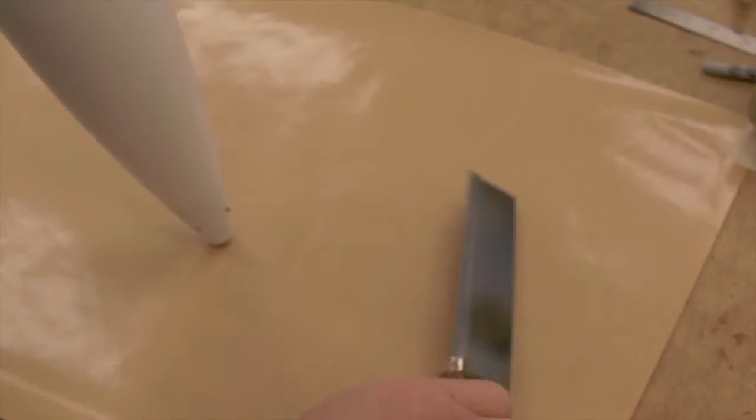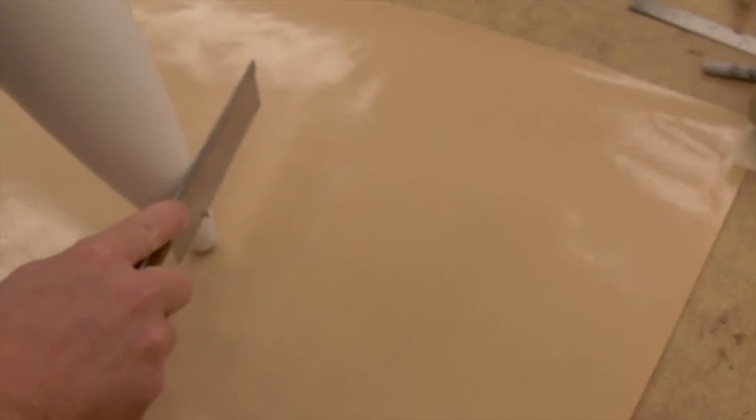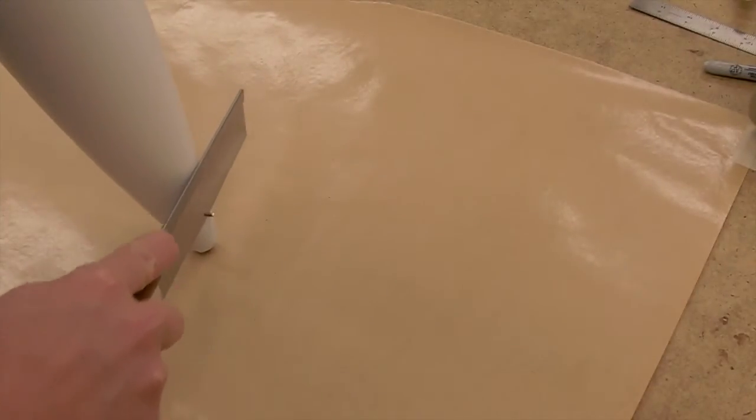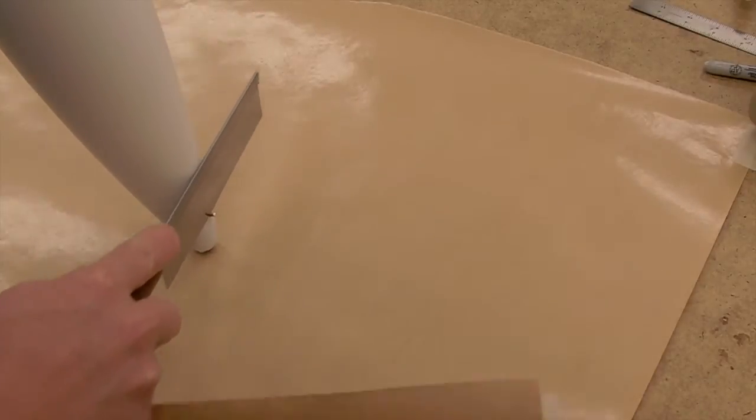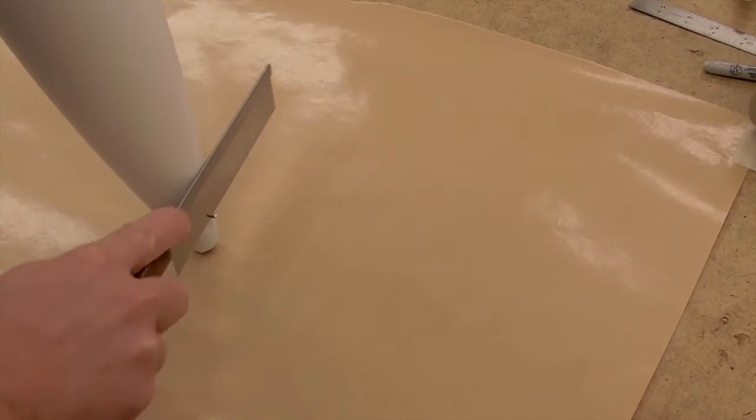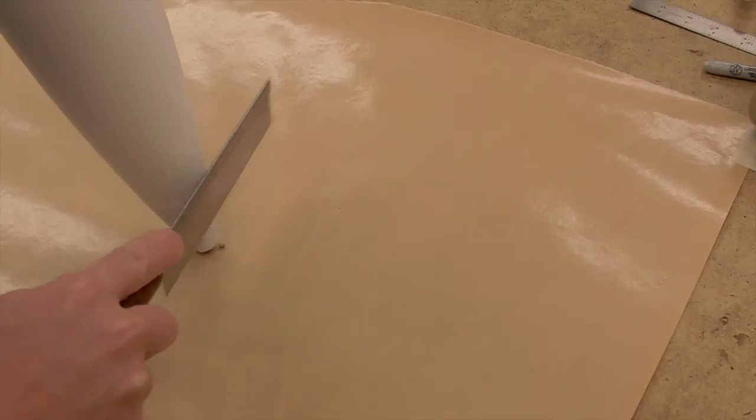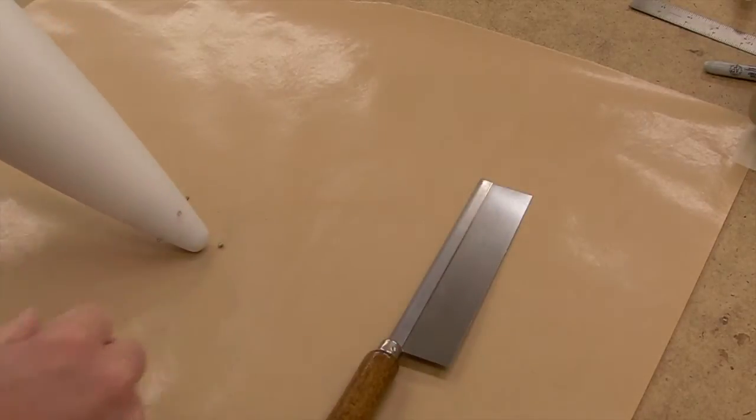Now once the epoxy is cured, we want to cut off the excess rods. Because it's just brass, it's quite easy to cut with a small saw.